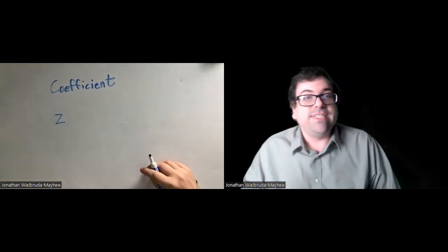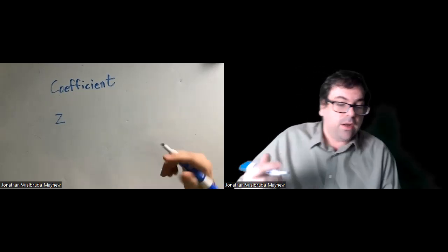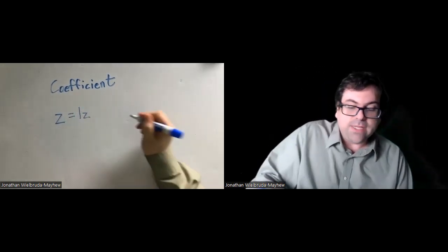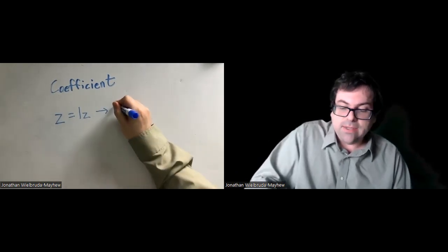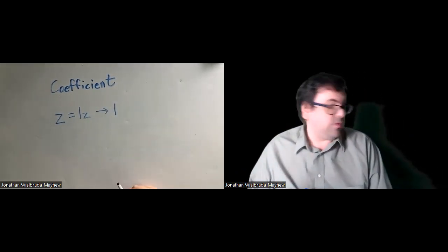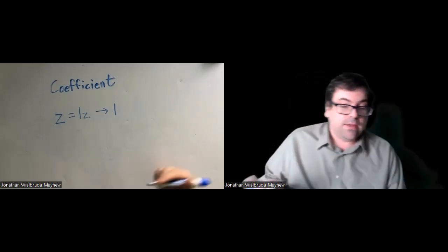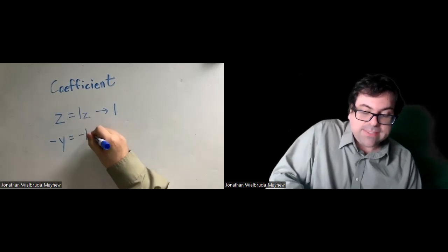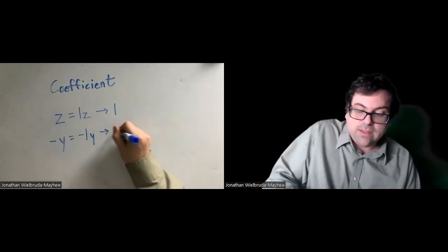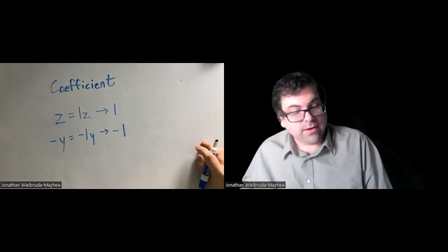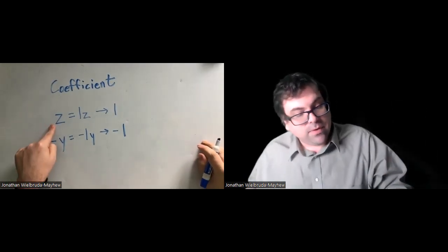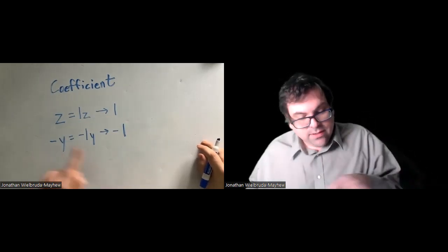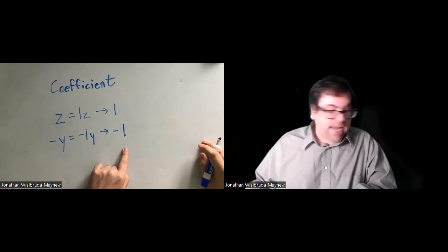The coefficient of z — we don't see a number here, but z is the same as 1z, 1 times z. So the coefficient would be 1. Similarly, if we had the term negative y, that would be the same as negative 1y. So we'd have a coefficient of negative 1. When we don't see a number in front, the coefficient is 1. When we just have a negative in front, the coefficient is negative 1.